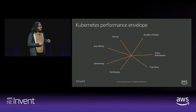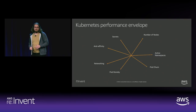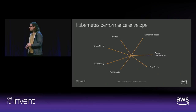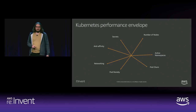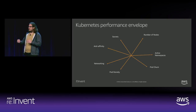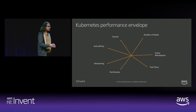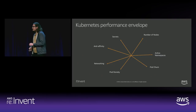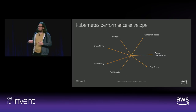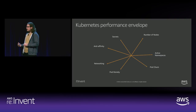When we talk about the Kubernetes control plane, think about the Kubernetes performance envelope. Several factors contribute to control plane performance: the number of nodes in your cluster, the number of active namespaces, the amount of pod churn (pods exiting and restarting, short-lived pods, or a busy CI/CD pipeline constantly pushing updates), pod density (how many pods you're stuffing onto each node), networking — the VPC CNI plugin is designed for very low overhead but IP tables still put burden on your cluster — and anti-affinity rules.